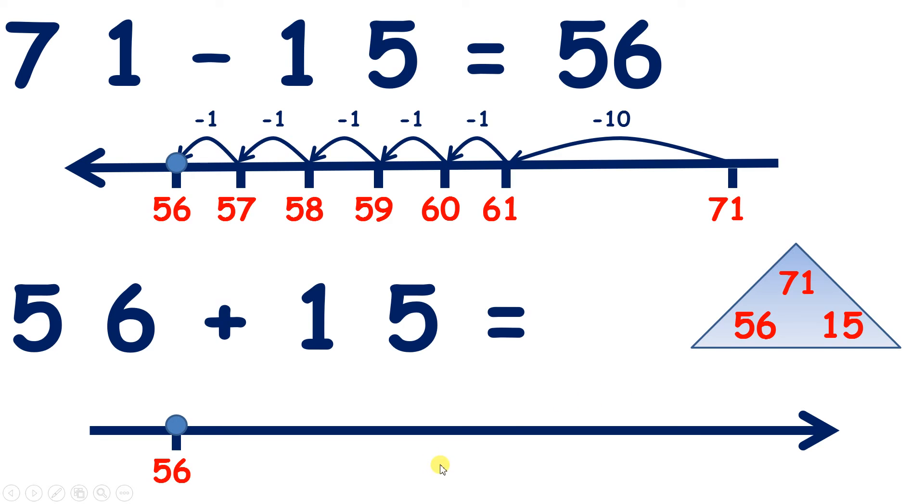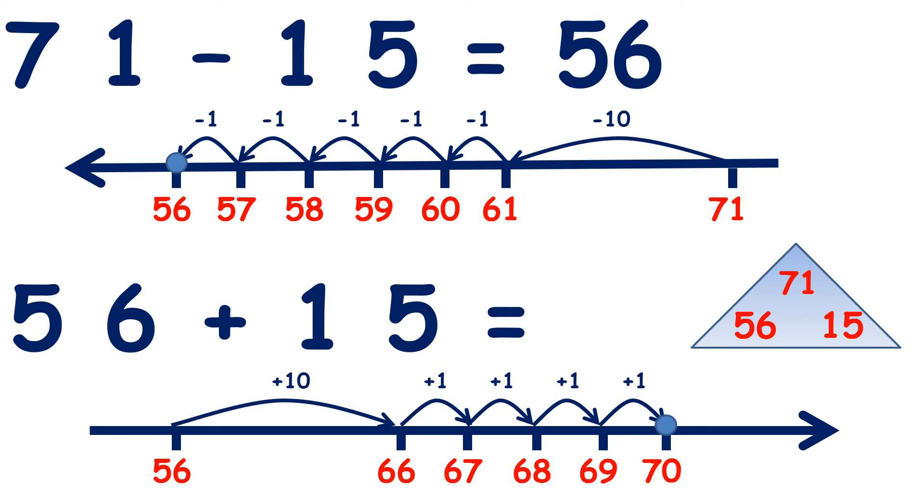So we start on 56, add 10 and we get 66, so we've added our 1 ten. Now we need to add 5 units, so let's count on 5 from 66: 67, 68, 69, 70, 71. So we've added our 5 units and we've got to 71.